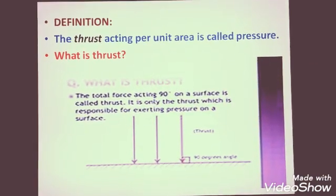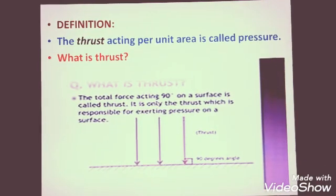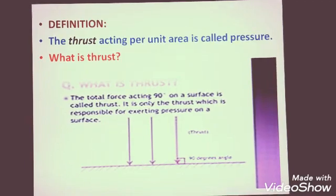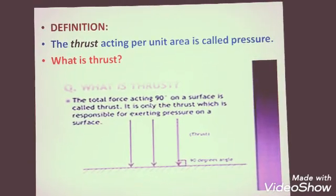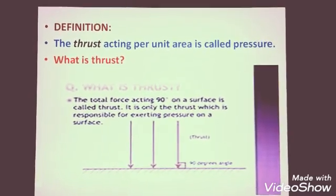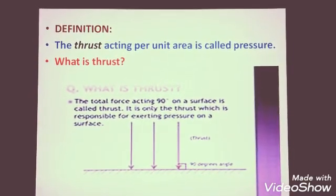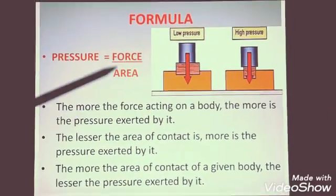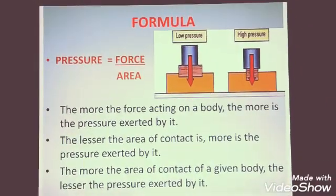Thrust is the force acting perpendicularly. Now, when I say perpendicular, that is 90 degrees to the surface. So, thrust is nothing but a perpendicular compressive force acting on the surface. The definition of pressure is the thrust acting per unit area. And what will be the formula? It will be force upon area where force is in the numerator and area is in the denominator.